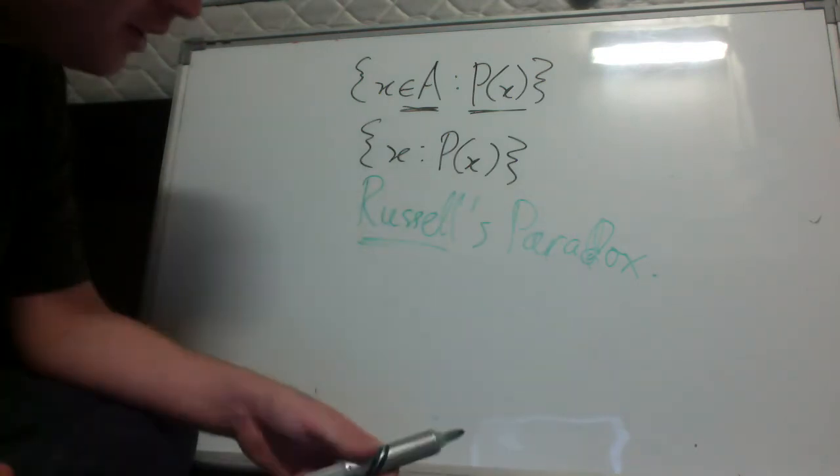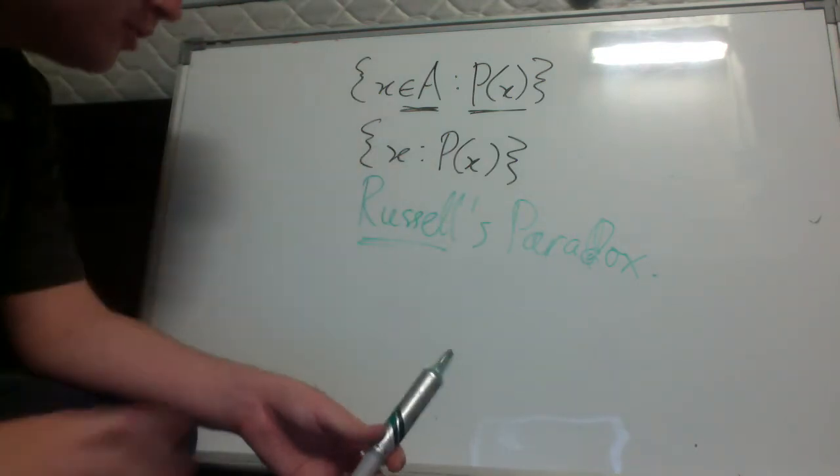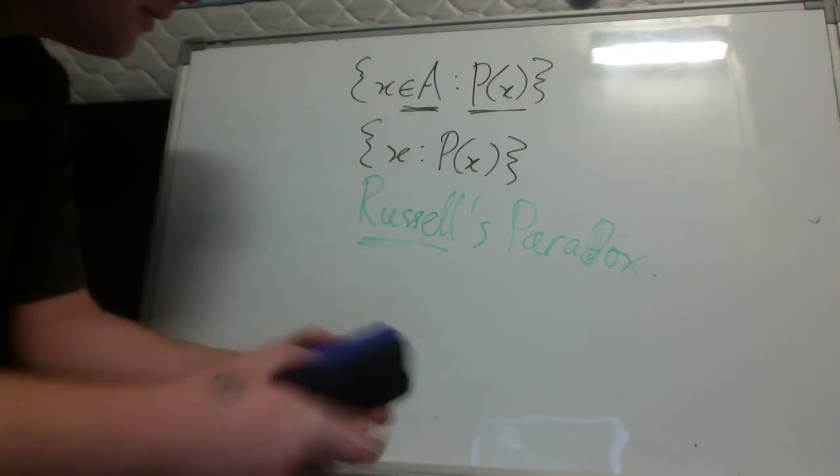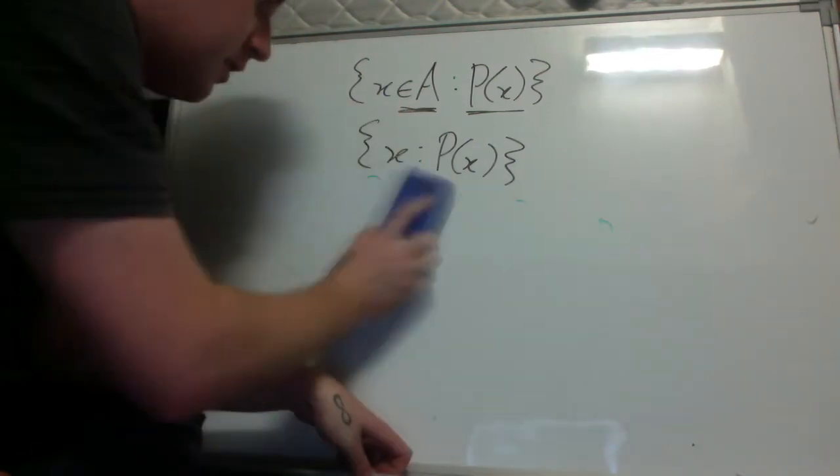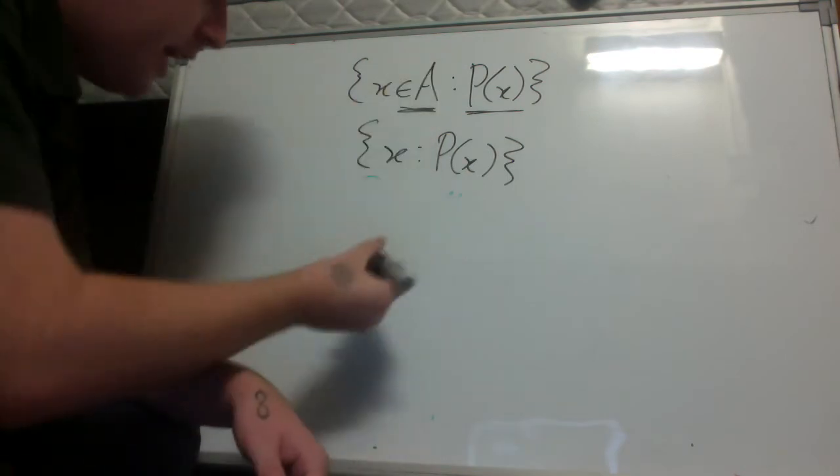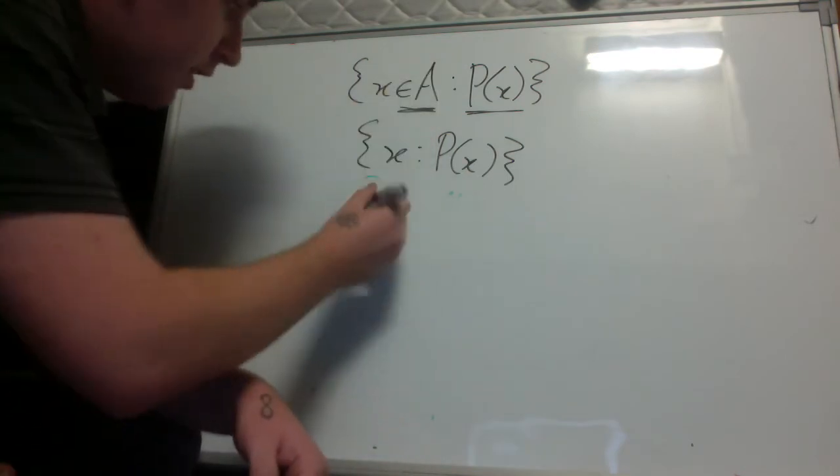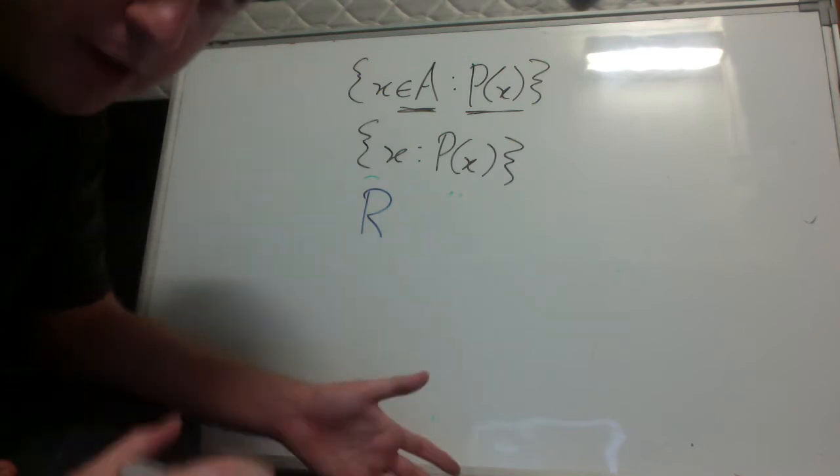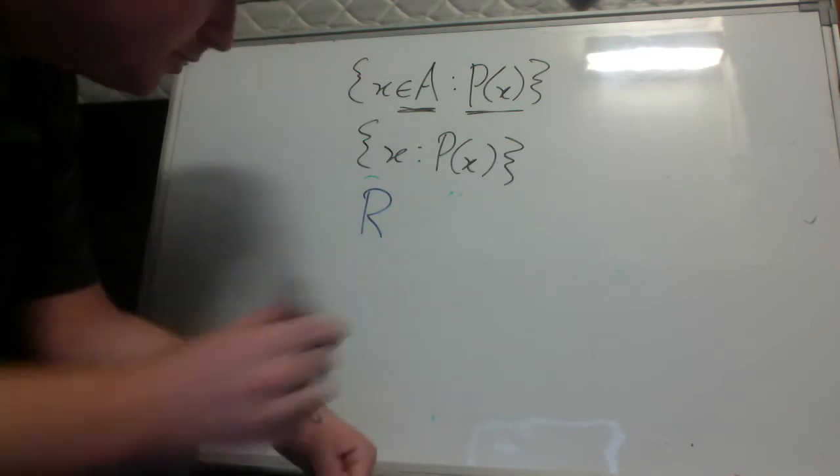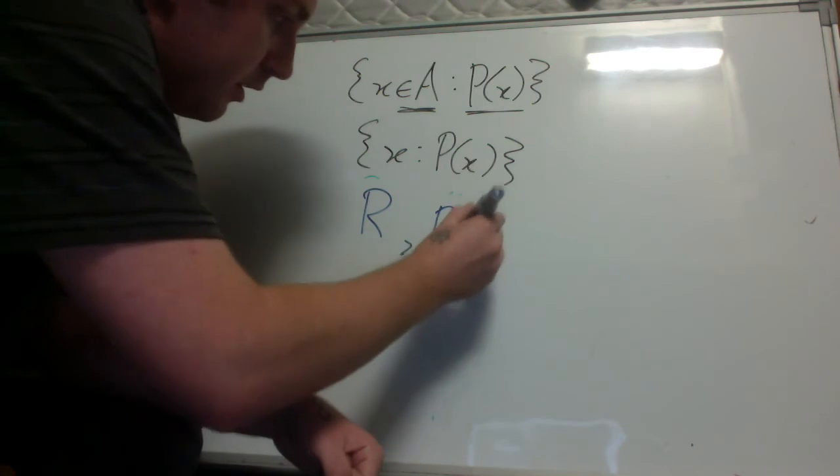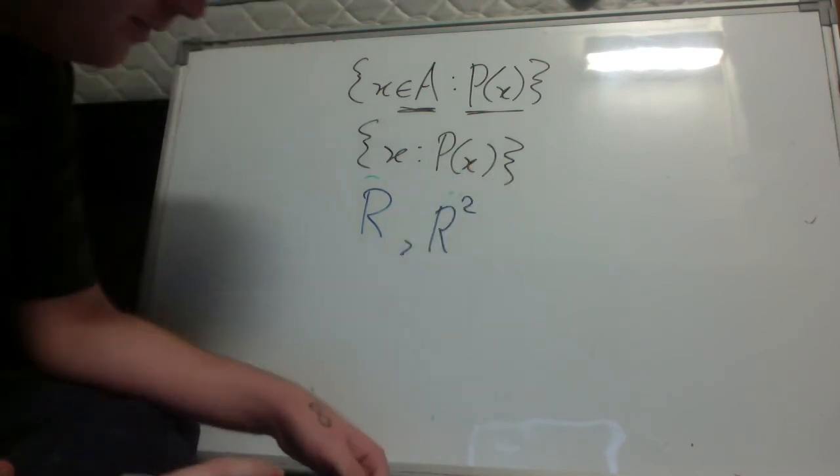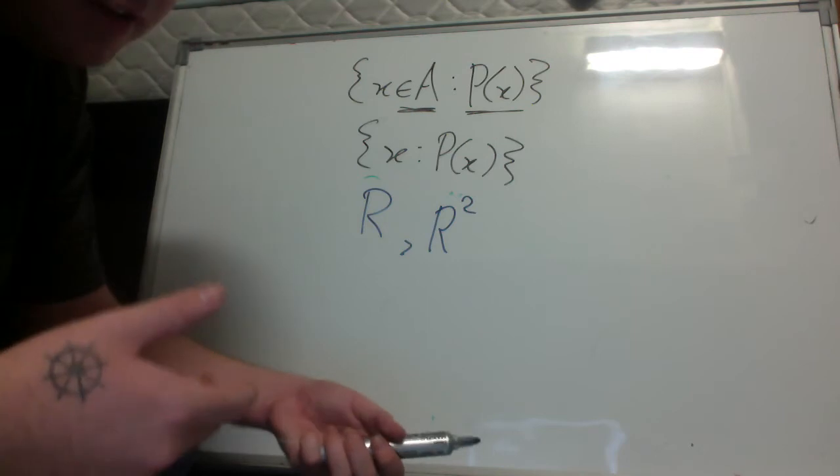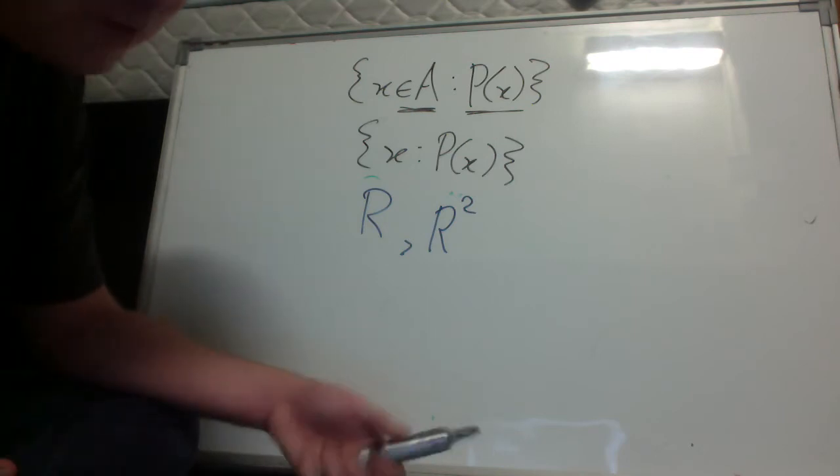I'm gonna do a whole video on Russell's paradox to go through what that is. But for now let's just assume that a is given. For this course, a is generally speaking going to be the set of real numbers or some subset of the real numbers, or r squared which is the Cartesian product of r with itself, the real numbers with themselves.